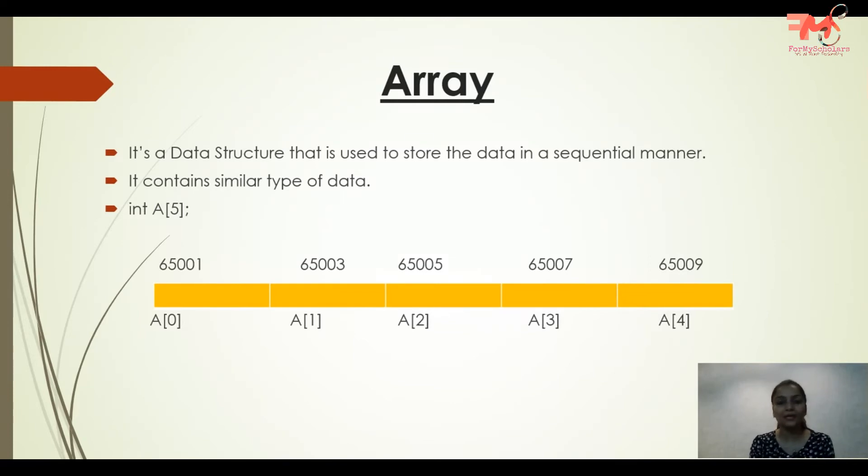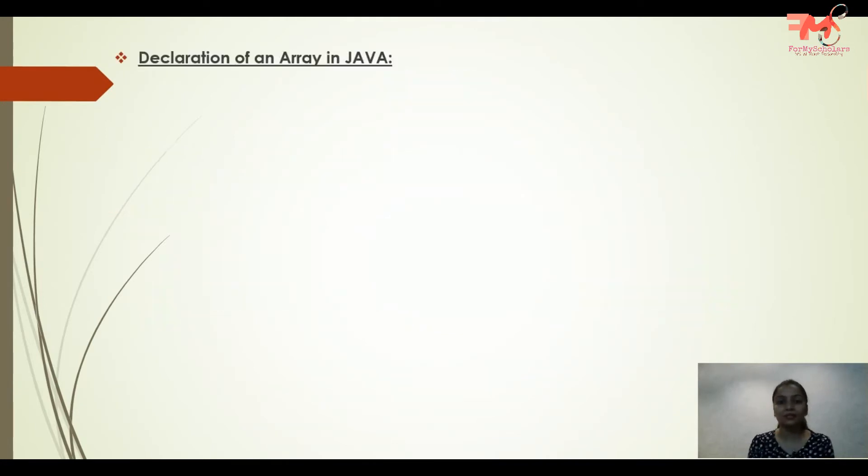Next, we will see how we can declare, initialize, and create an array in Java. First is declaration of an array in Java. Basically two methods are there: int a[] and second method is int[] a. If you talk about general form, it's the type of the array, then the name of the array, and then square brackets for the subscript. This is how you can declare any array in Java. When you declare, no space is allocated in memory for the array, just a pointer is created.